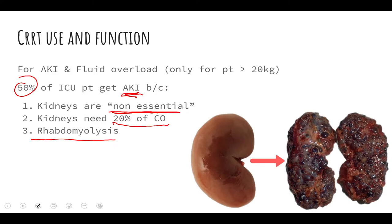The third reason is rhabdomyolysis — a breakdown of your muscles when you're not using them. When you're sick and lying in bed, you tend to break down your muscles, and all that extra waste gets filtered by the kidneys, which tends to damage them as well. These are the three top reasons why patients in critical care units end up getting acute kidney injury. Also know that CRRT is only meant for patients that are over 20 kilograms, or roughly 40 pounds of body weight.